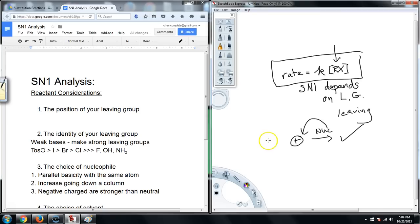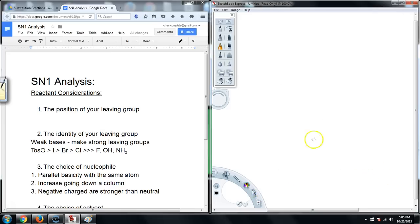So position of the leaving group, the big thing here with SN1 is that we are creating carbocations. And so whereas in SN2, we dealt with sterics, in SN1, we are going to consider electronics. Stability of the carbocation that is left behind.